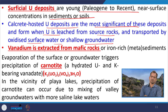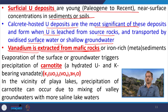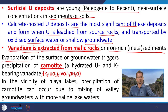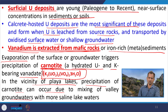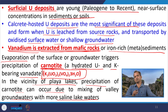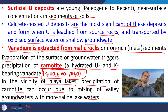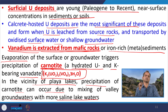Vanadium is extracted from mafic rock or iron-rich meta-sediment, so there is a vanadium deposit there. We also have carnotite — carnotite is an evaporite. Evaporation of surface or groundwater triggers precipitation of carnotite, which is a hydrated uranium and K-bearing vanadium mineral. In the vicinity of playa lakes, precipitation of carnotite can occur due to mixing of valley groundwater with more saline lake water. You can see that everywhere there is a change of salinity and a change in pH condition where this mineralization is going on. Either it is a saline change or a chemical change of fluids when they are mixing together — that front is the reaction front giving rise to mineralization.